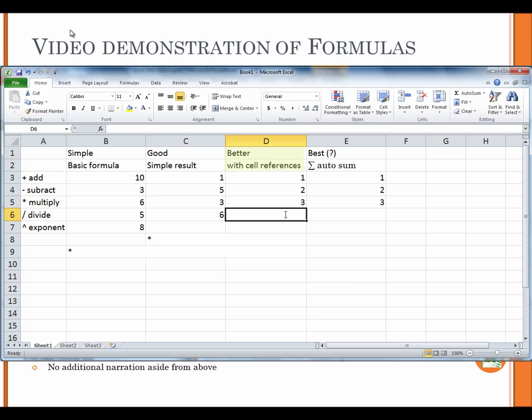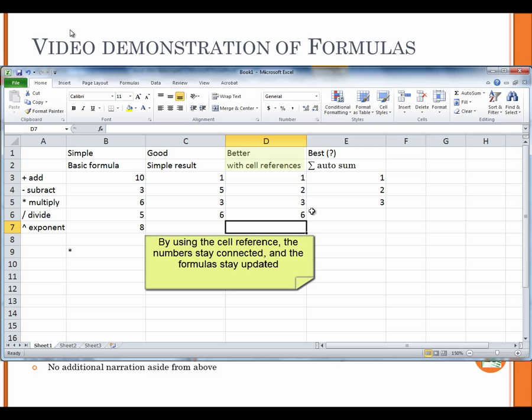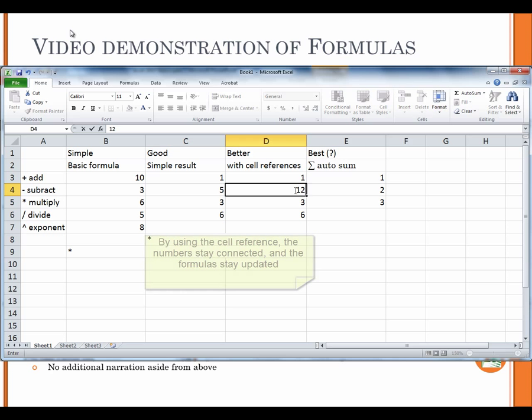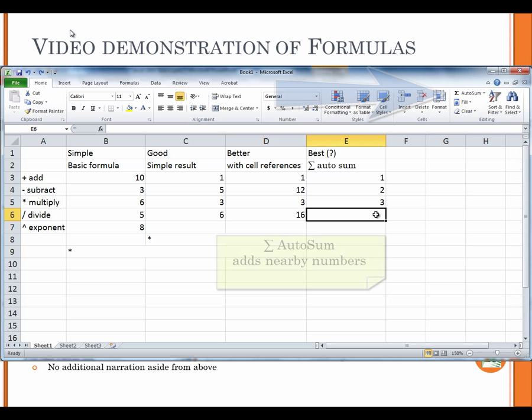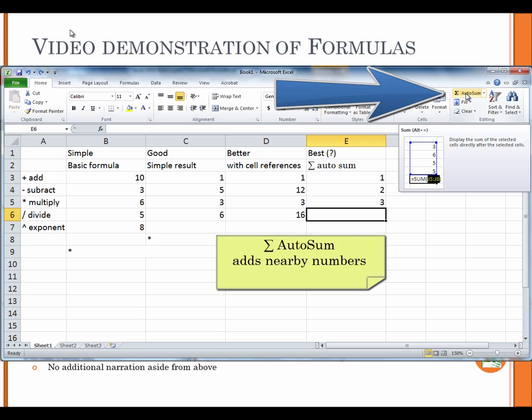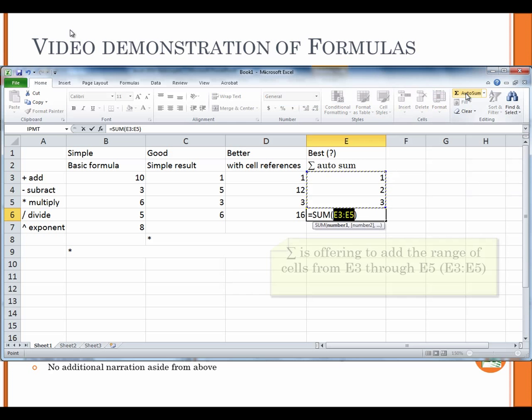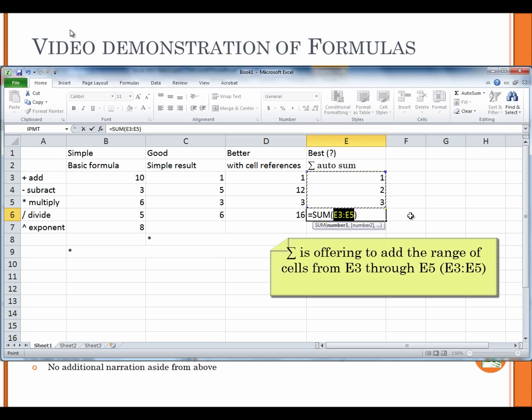Here's a better way. Equals D3 plus D4 plus D5. By using cell reference, the numbers stay connected and the formulas stay up to date. Sigma Autosum adds nearby numbers. Sigma is offering to add the range of cells from E3 through E5.